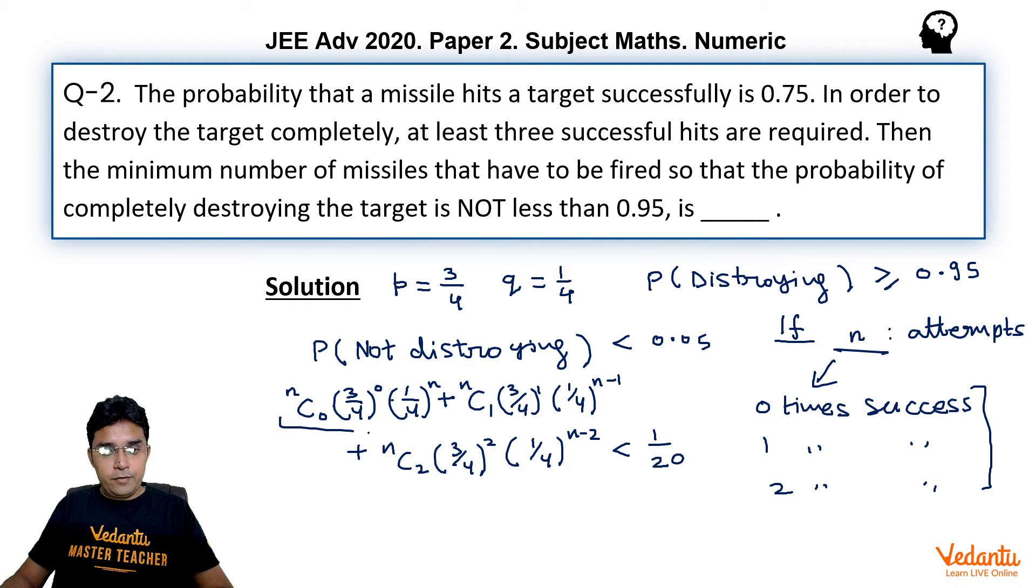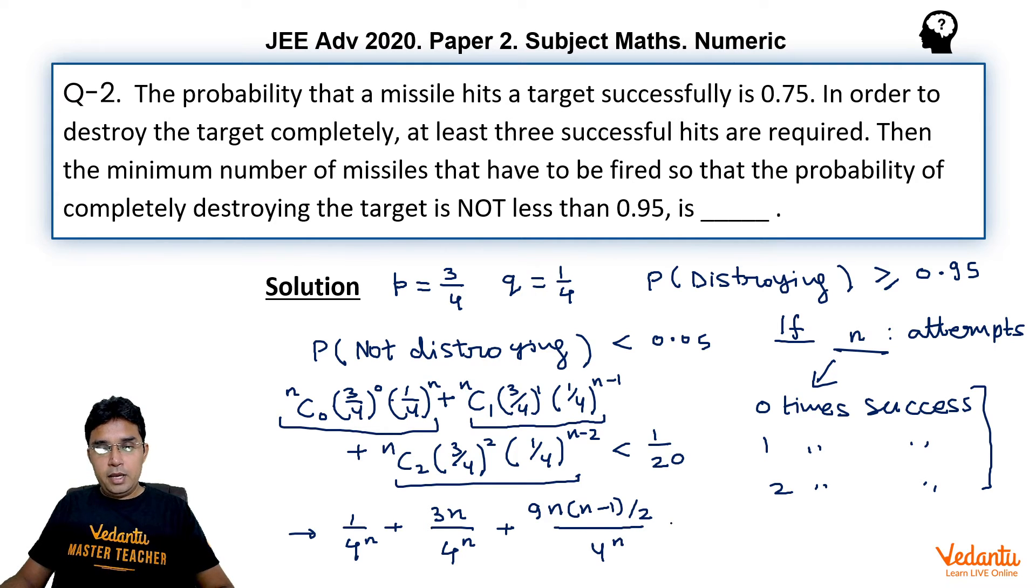Now if we simplify these three terms individually, what we get? Let us see here nC0 is 1, so here we will get 1 upon 4 raised to the power n. The second term nC1 is n and 3 will also come here, so we get 3n upon 4 raised to the power n plus nC2 is n into n minus 1 upon 2 and here 3 square 9 will be there, so 9 into n into n minus 1 divided by 2 whole divided by 4 raised to the power n and that should be less than 1 upon 20.